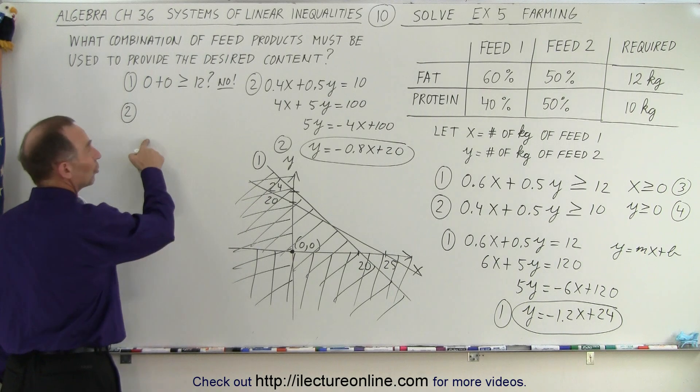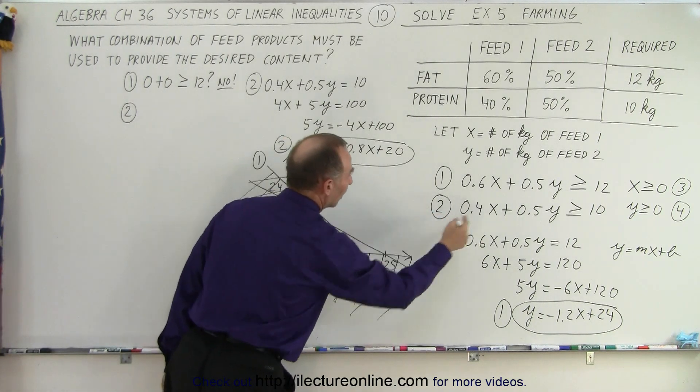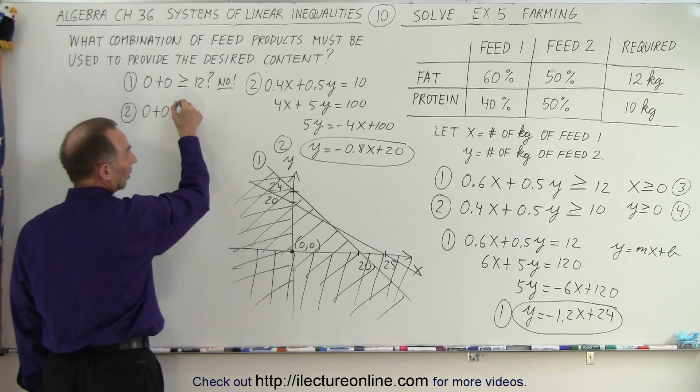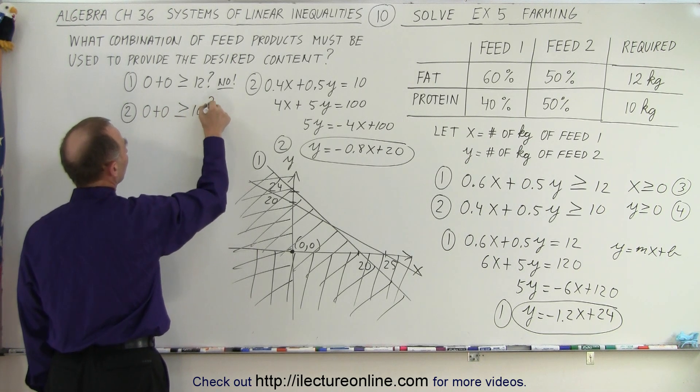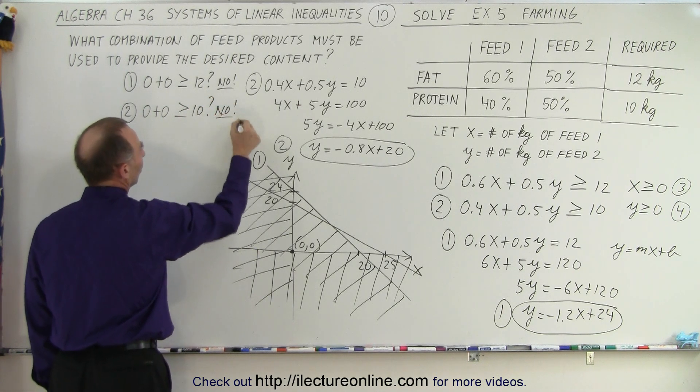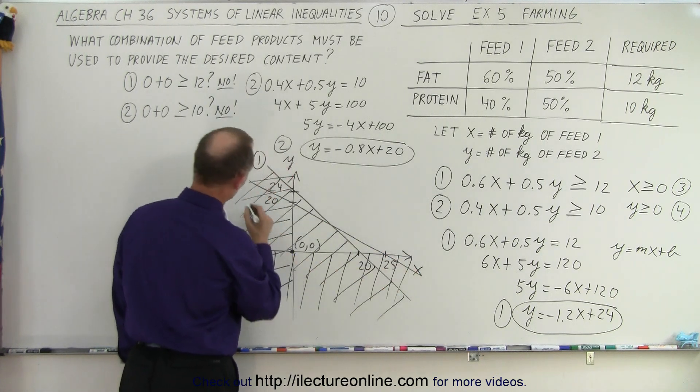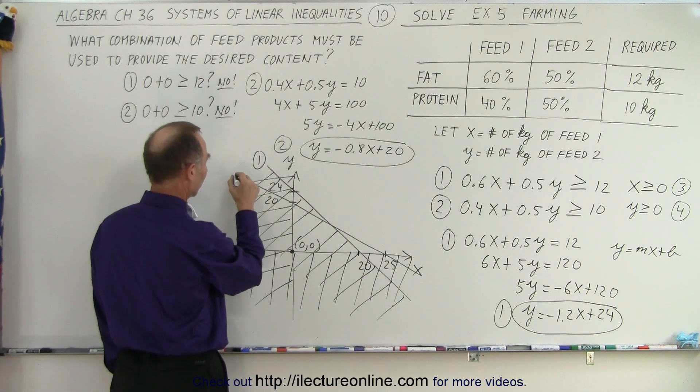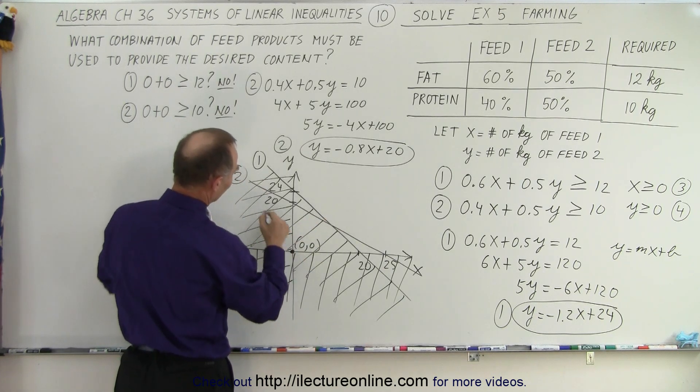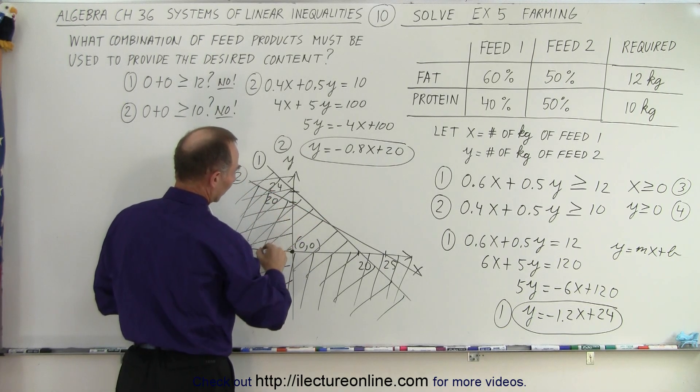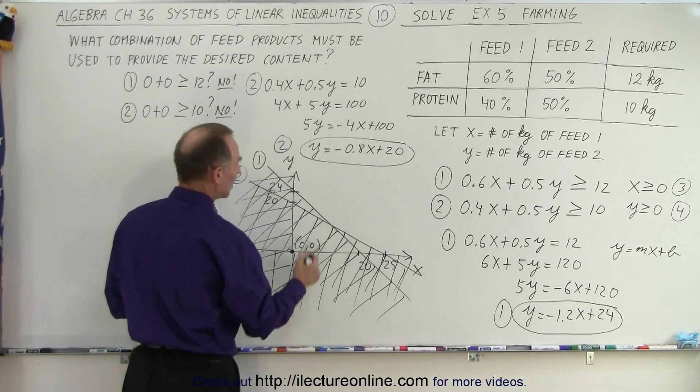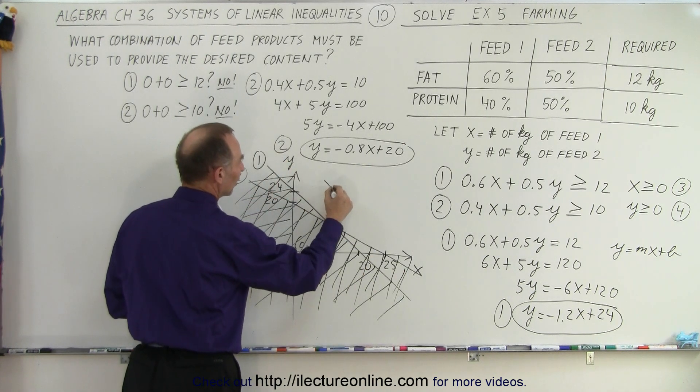And then for line number two, we plug in 0 and 0. And so we get 0 plus 0. Is that greater than or equal to 10? Question mark. And the answer is no. So 0, 0 is on the wrong side of line number two. I didn't label line number two, did I? Line number two. So that means that this side is the undesired side. So we get rid of that, which means that this here is the region that we want.